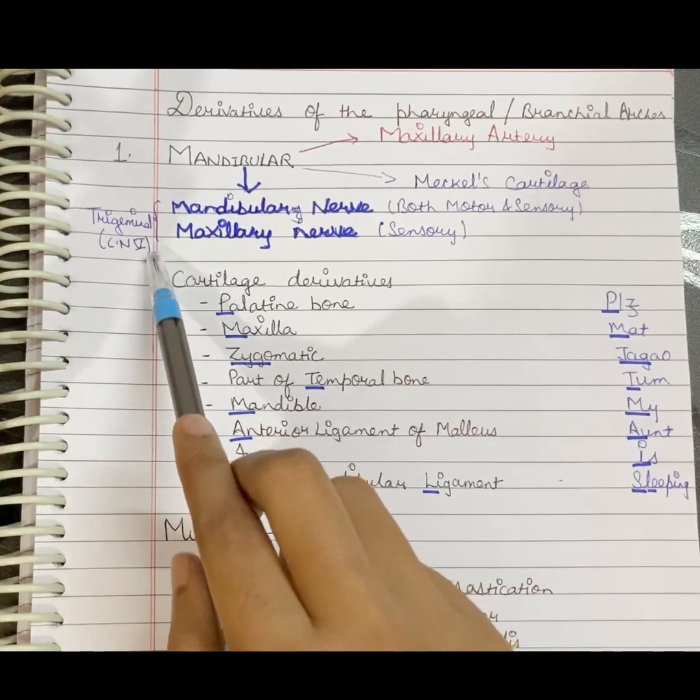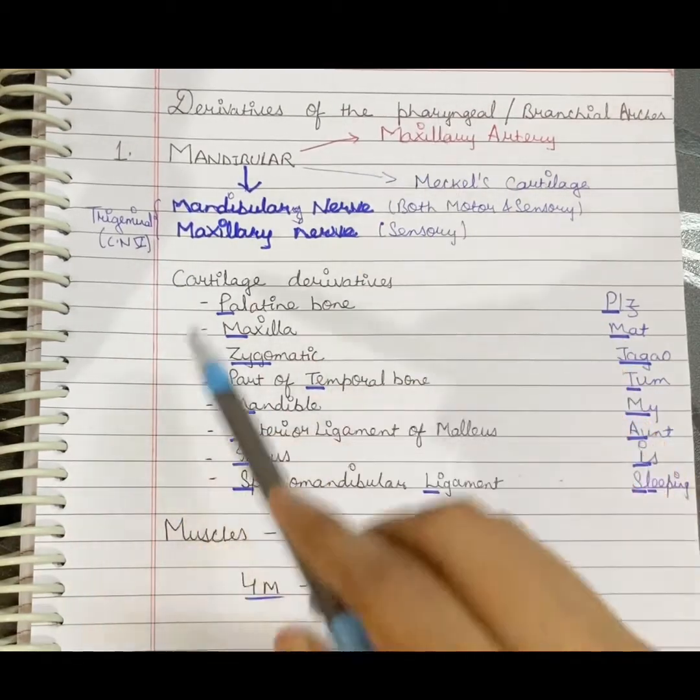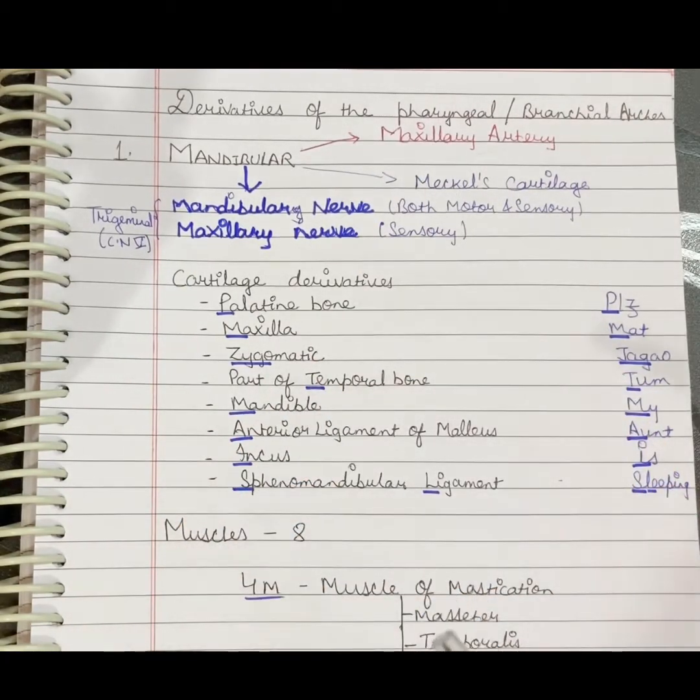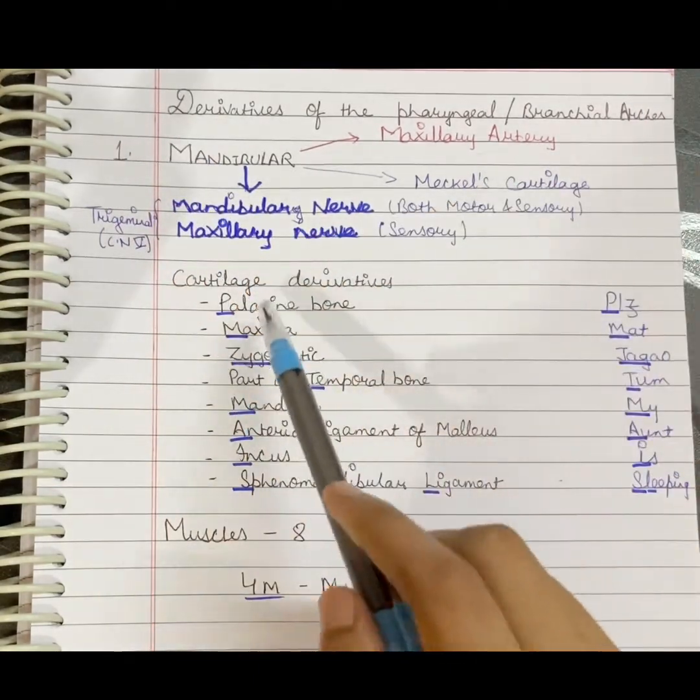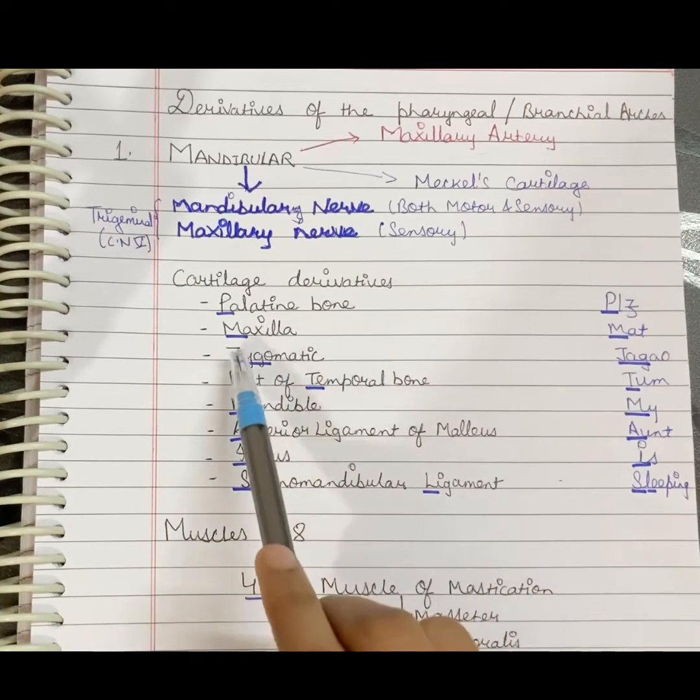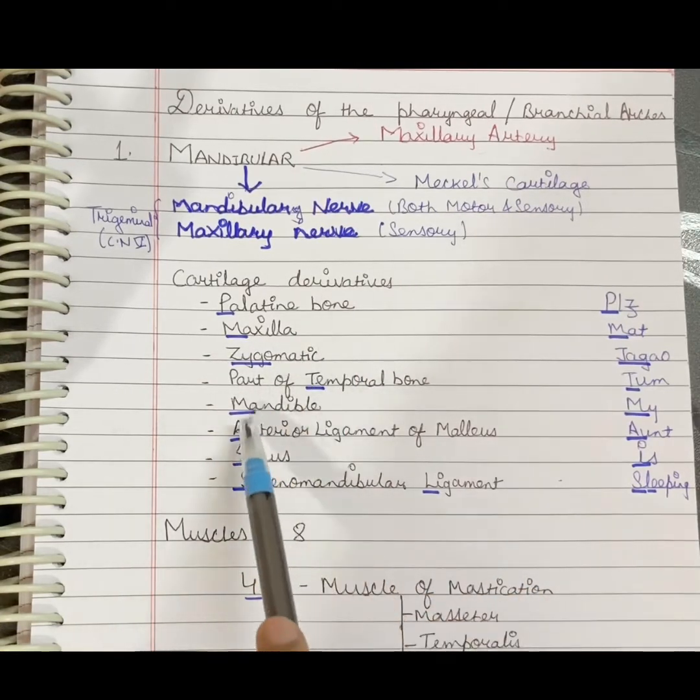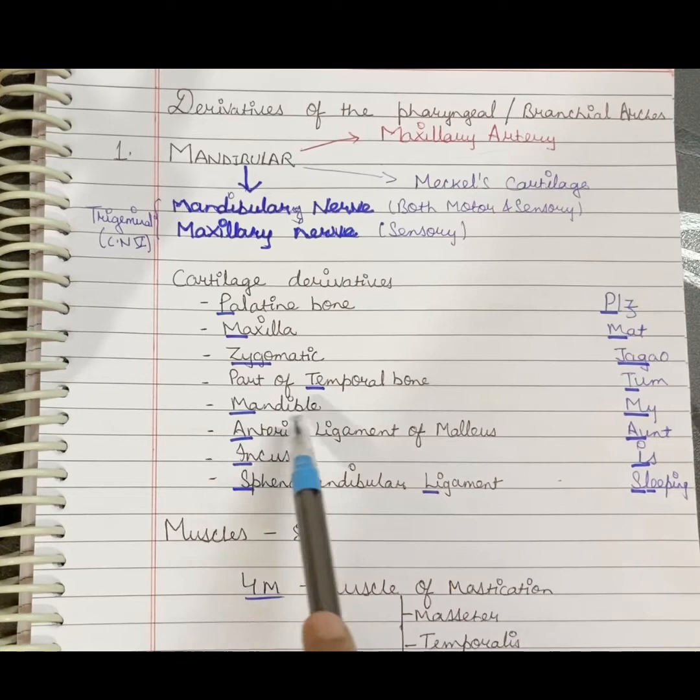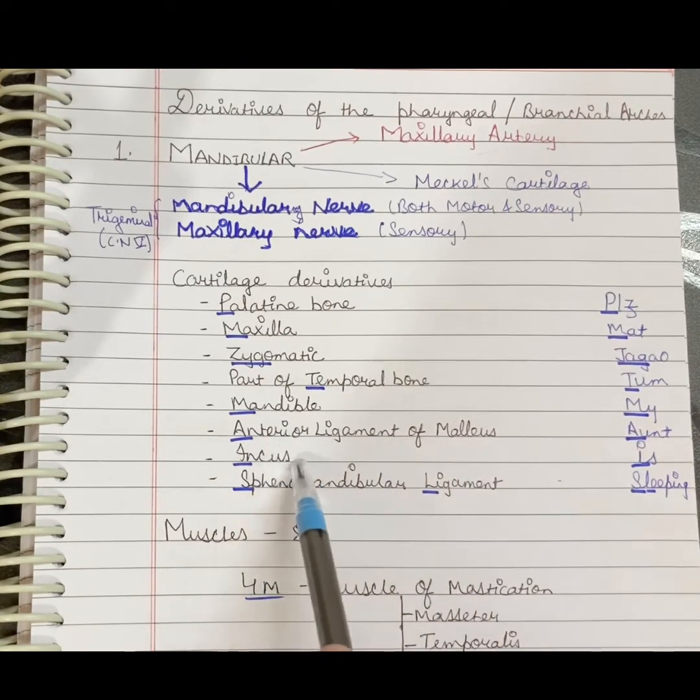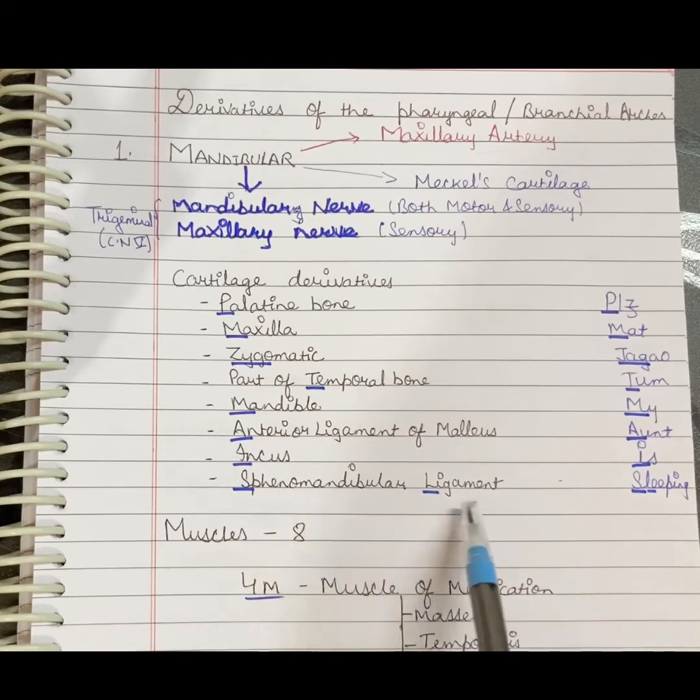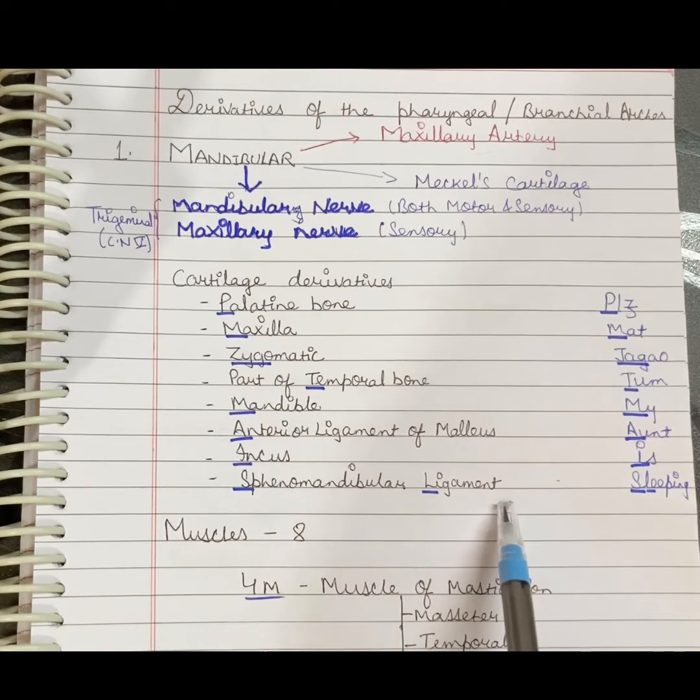Now we will see the cartilage derivatives from the first pharyngeal arch. These are: palatine bone, maxilla, zygomatic bone, part of temporal bone, mandible, anterior ligament of malleus, incus, and the sphenomandibular ligament.